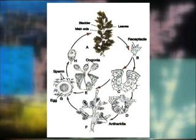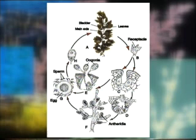Thus, the haploid phase in the life cycle of Sargassum is represented only by gametes and the diploid phase is dominant. It remains there for a pretty long time.